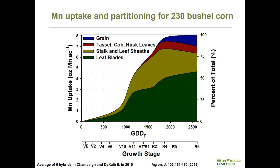In contrast, if we look at the uptake and partitioning of manganese for a 230-bushel corn crop, a much larger percentage of the manganese is actually found in the leaf. At maturity, over 50 percent of the manganese in the plant is found in the leaves of the corn plant. Manganese uptake in the leaf occurs across the entire growing season, really starting to ramp up around V4-V5, but continuing all the way through physiological maturity. As a result, referring back to our elemental prominence concept, manganese continues to be highly responsive in the corn crop even late in the growing season if it's deficient in the leaf.